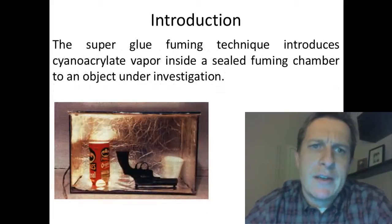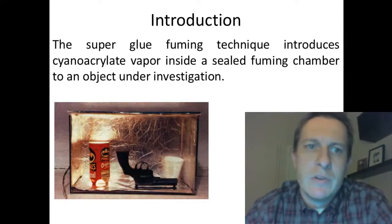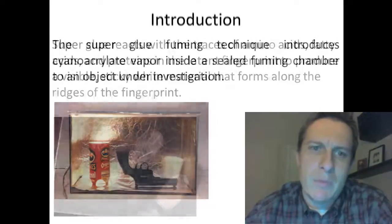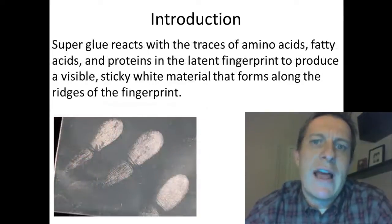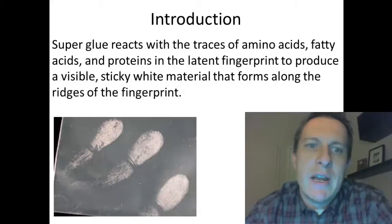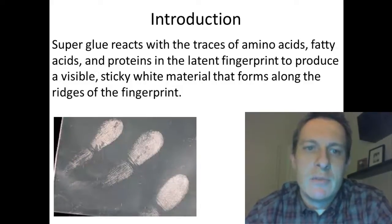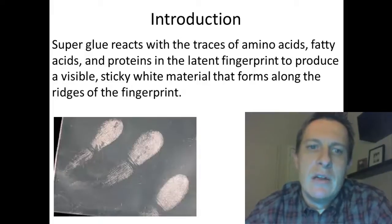Well in this case, the superglue fuming technique, we are going to introduce the active ingredient of superglue which is cyanoacrylate vapor and we are going to do so inside of a sealed fuming chamber to some object under investigation. What is going to happen is the superglue then reacts with traces of amino acids, fatty acids and proteins that are within the latent fingerprint and produces a visible sticky white material forming around the ridges of the fingerprint.